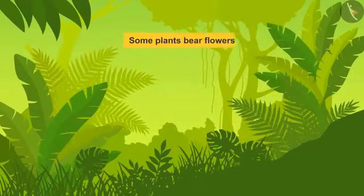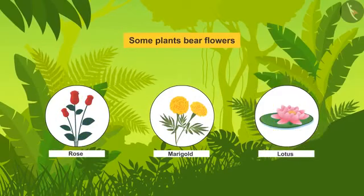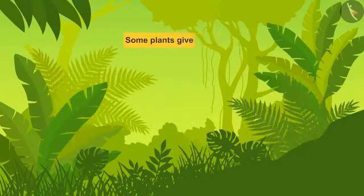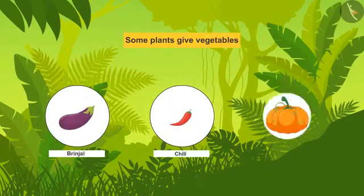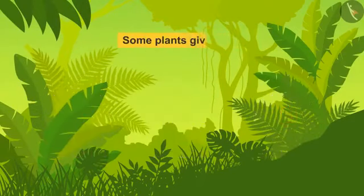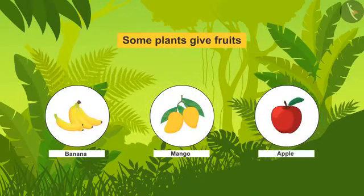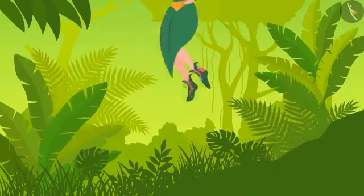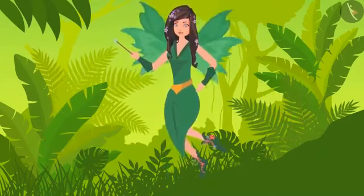Some plants wear flowers like rose, marigold and lotus. Some plants give vegetables like brinjal, chilli and pumpkin. Some plants are laden with fruits like banana, mango and apple. Oh dear, so many kinds of plants with so many different uses.